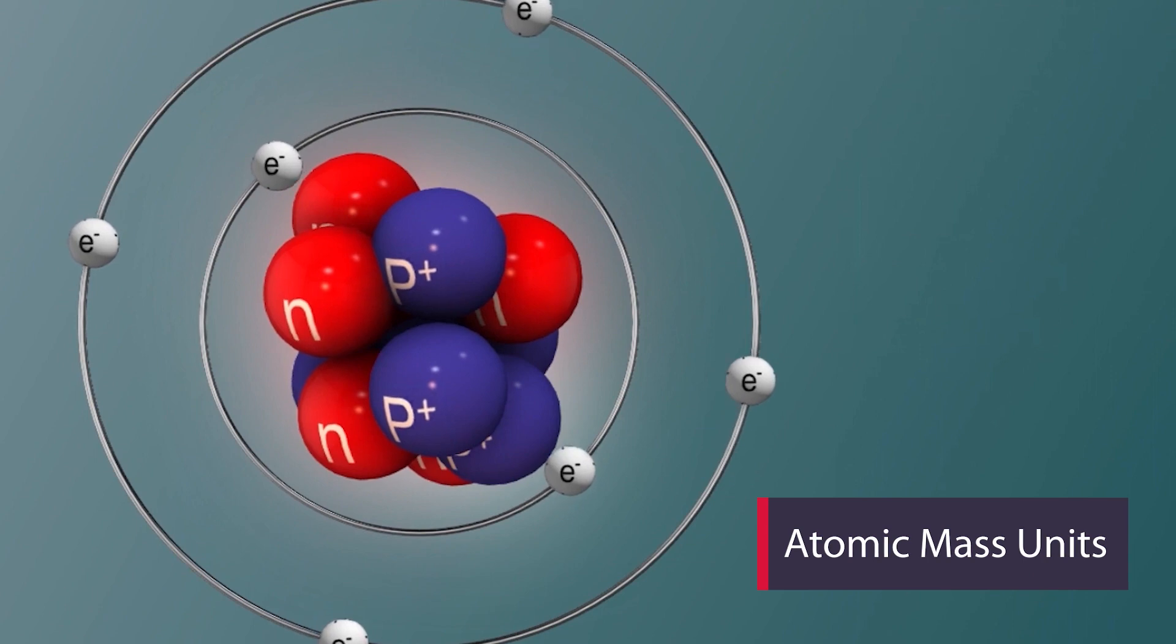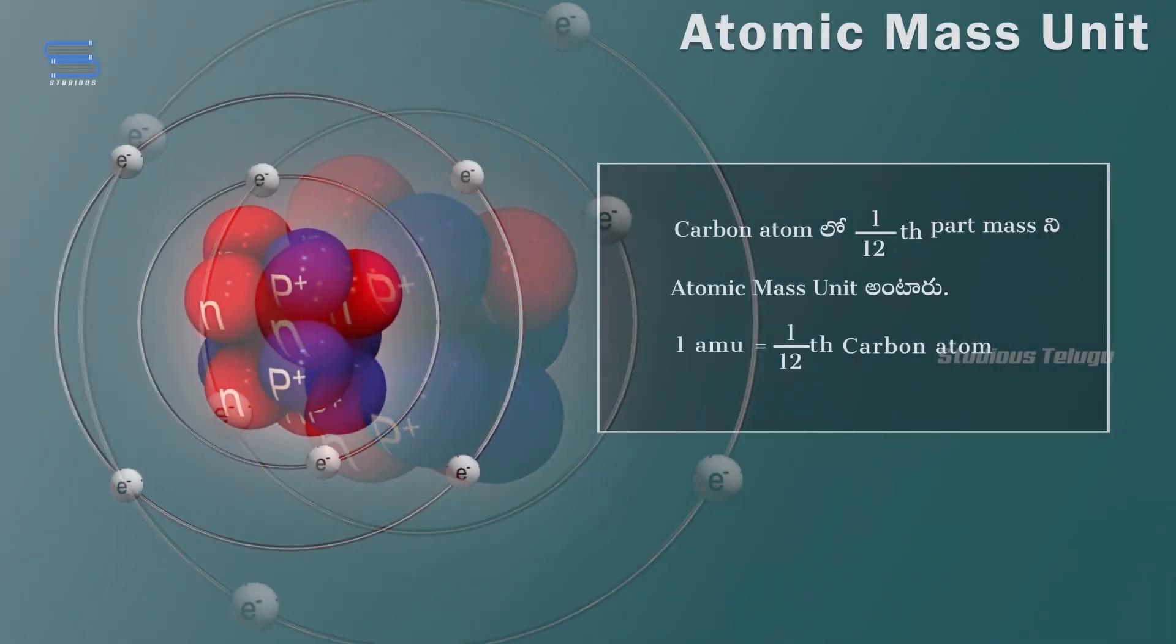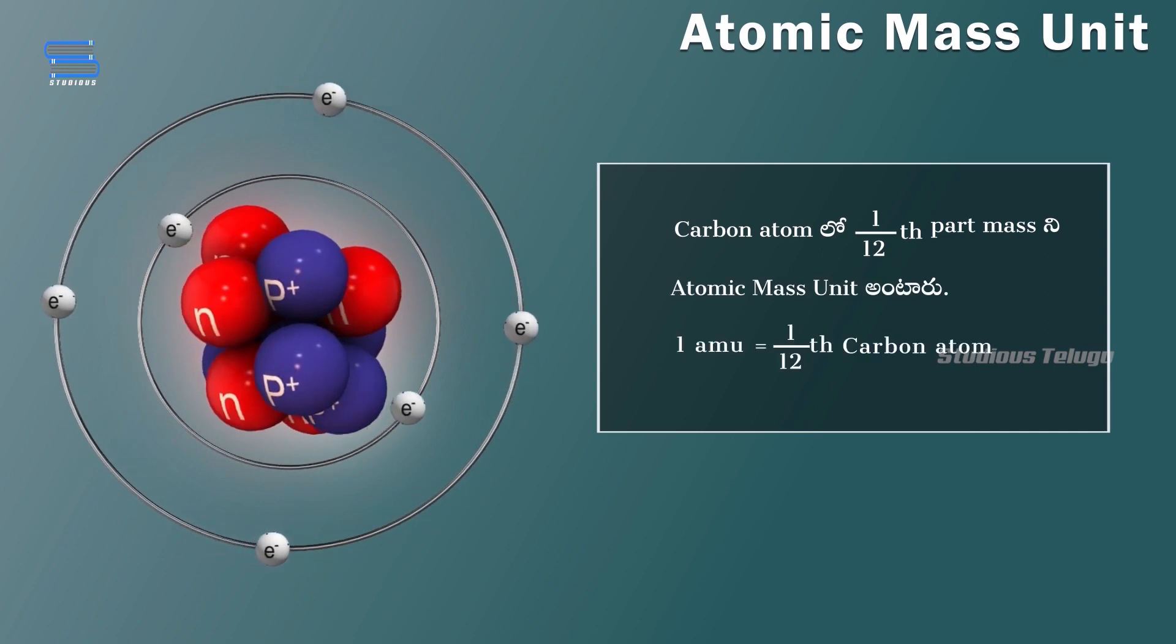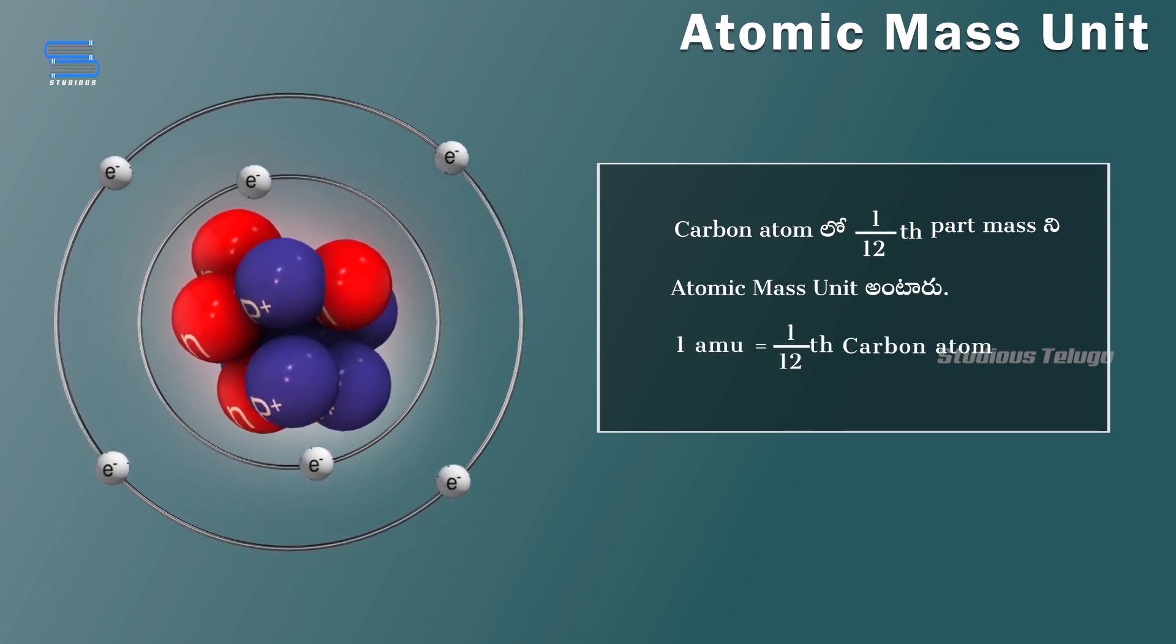Let's start by understanding atomic mass units, AMU. Scientists use this unit to measure the mass of atoms and subatomic particles. It is based on the mass of a specific carbon isotope, carbon-12.